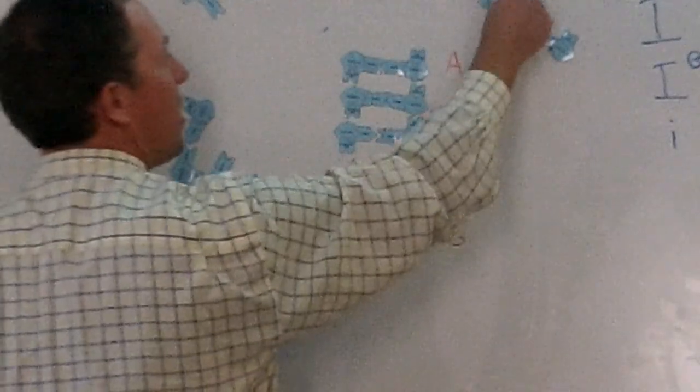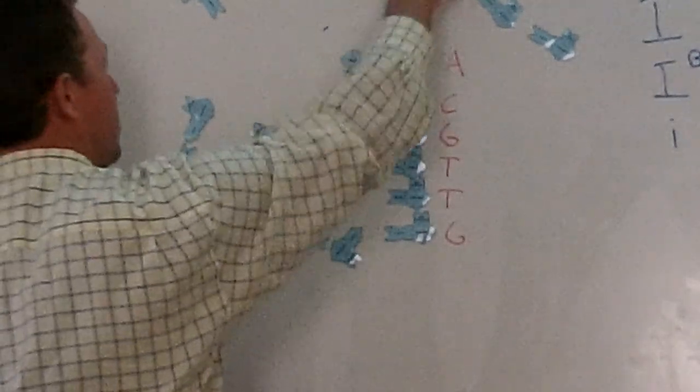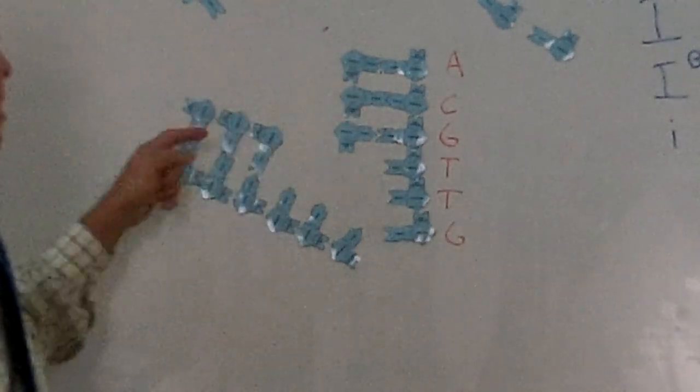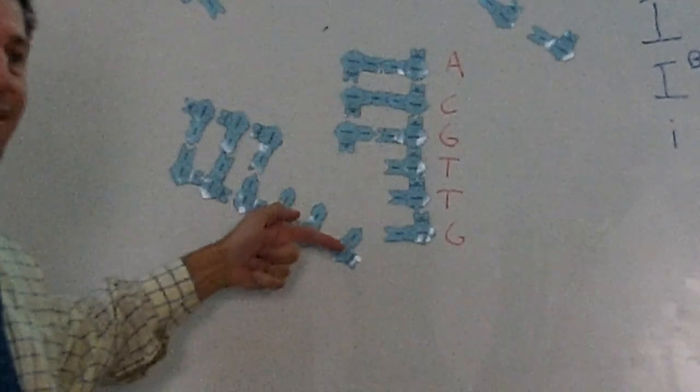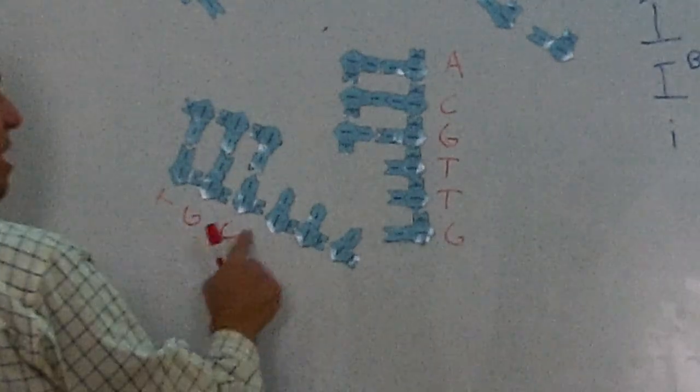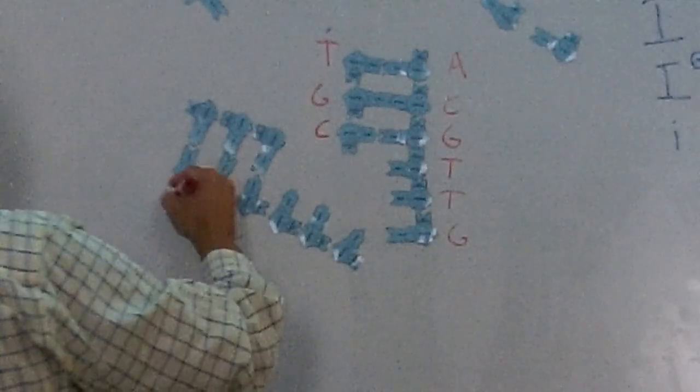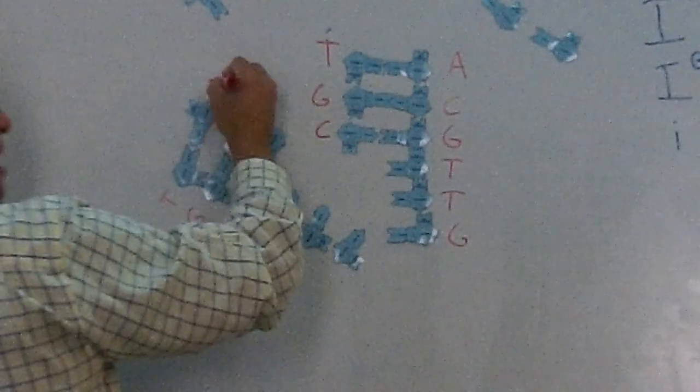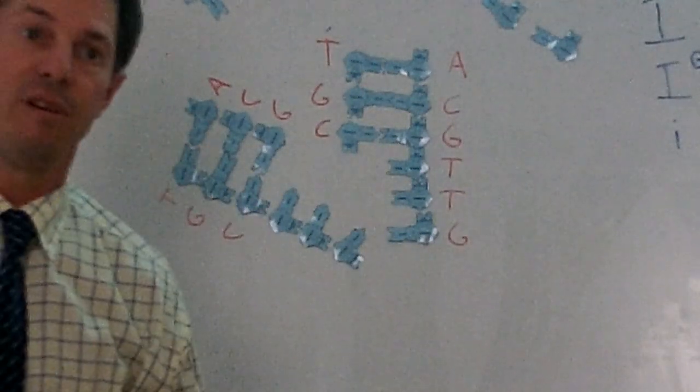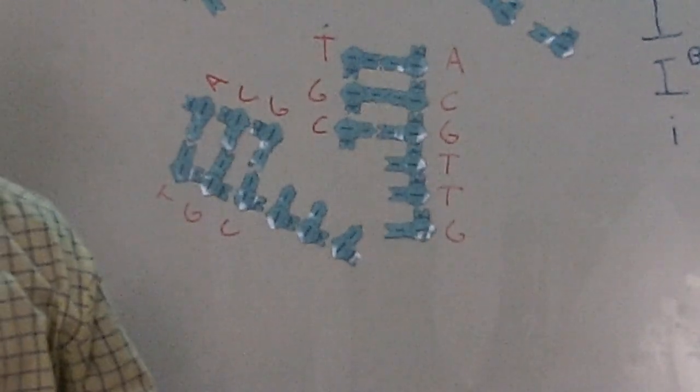And these two will be identical, right? Because this was T, G, C, y'all told me. So A can only attach to T and C can only attach to G. So this will be A, C, G. And now we have two identical copies. What is it called? That's how DNA copies itself. What's that process called? It's called DNA replication.